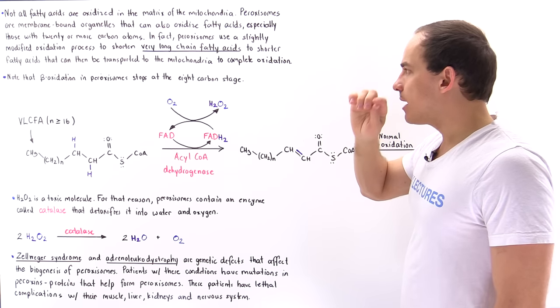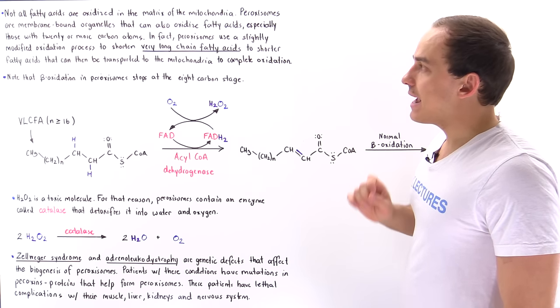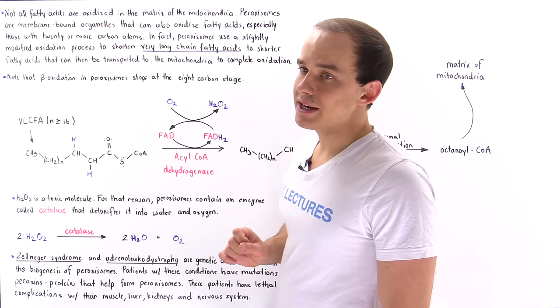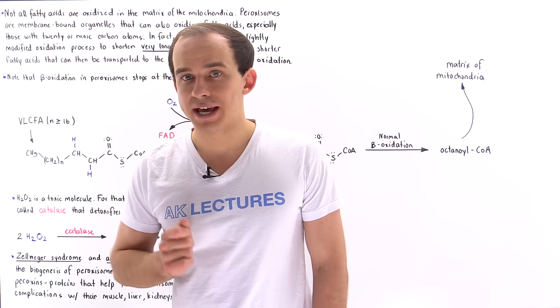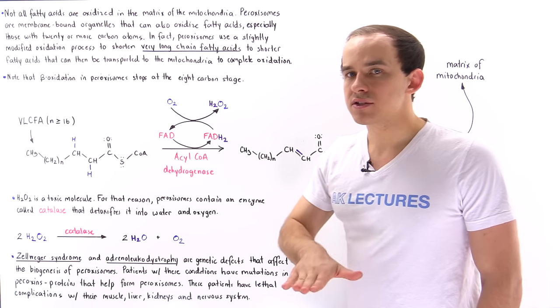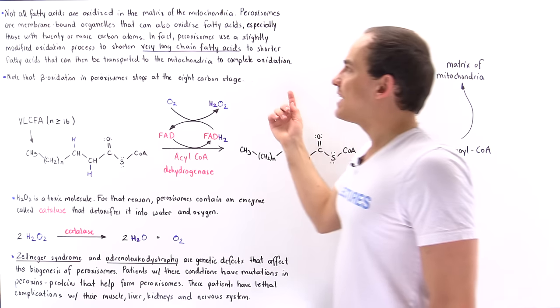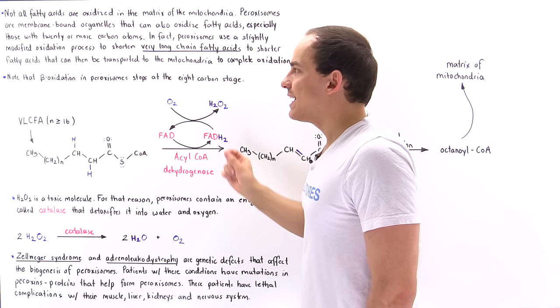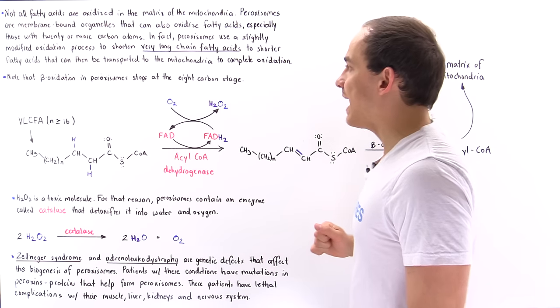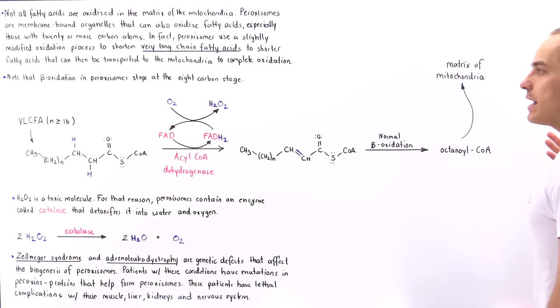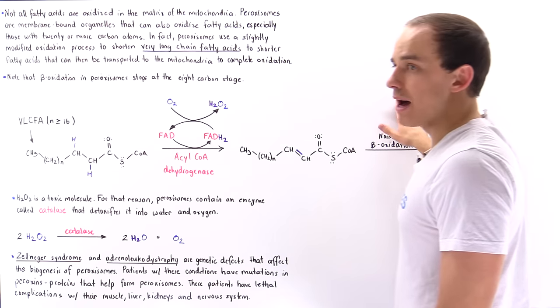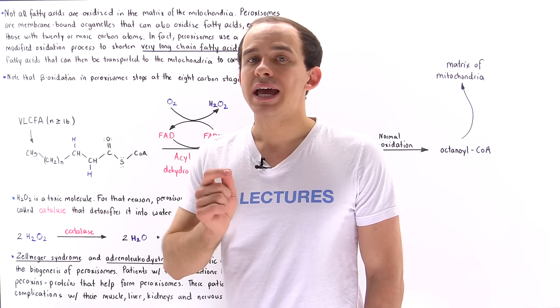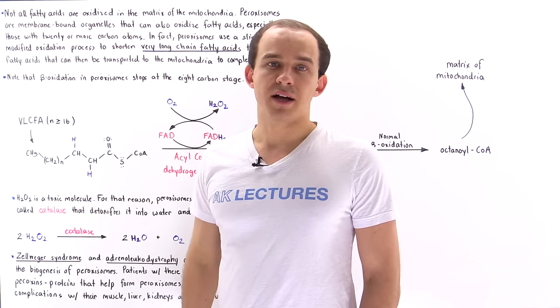So to summarize, we see that our fatty acid oxidation doesn't only take place in the matrix of the mitochondria. It also takes place in the peroxisome. And what the peroxisome ultimately does is it helps us take the very long-chain fatty acids. It helps us actually shorten those fatty acids so that they can be then transported into the matrix of the mitochondria and broken down by the beta-oxidation step that takes place inside the matrix of the mitochondrion.